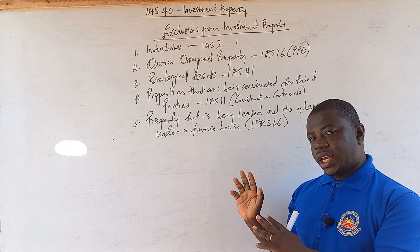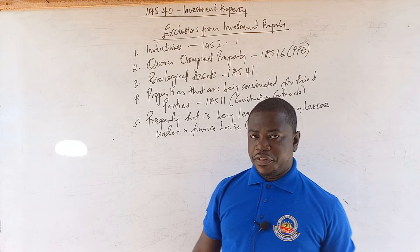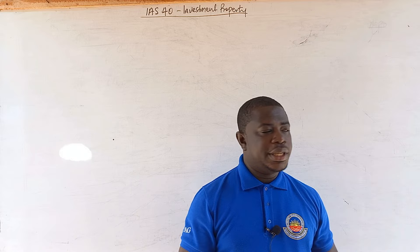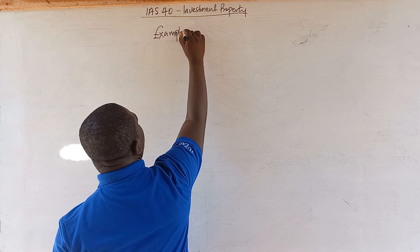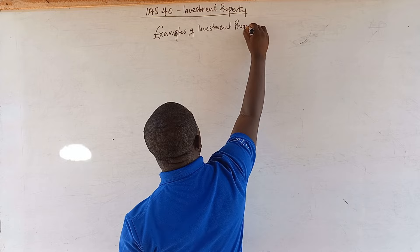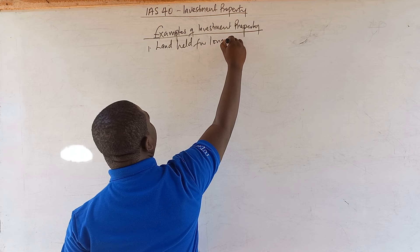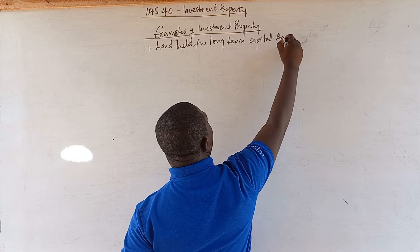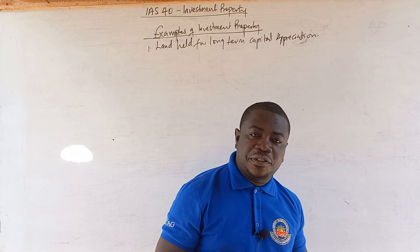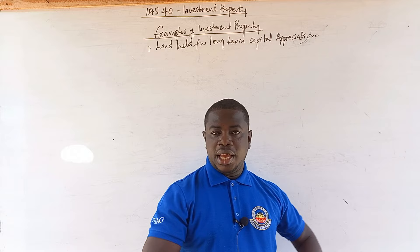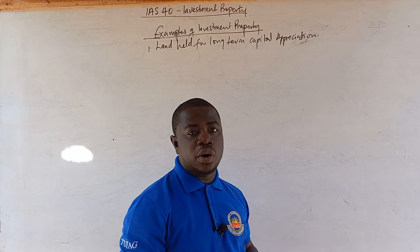If those are what investment property is not, then what is investment property? I am going to give you examples. The first example is land held for long-term capital appreciation. When you buy land and hold it for long-term capital appreciation, it is classified under investment property. Many businesses buy land, don't touch it immediately, and allow the value to appreciate over time — that qualifies as investment property.